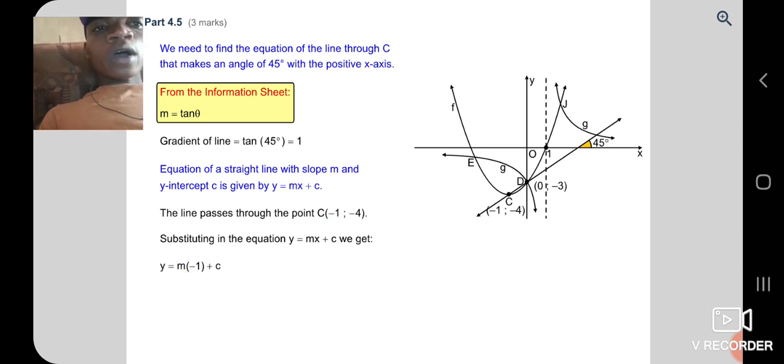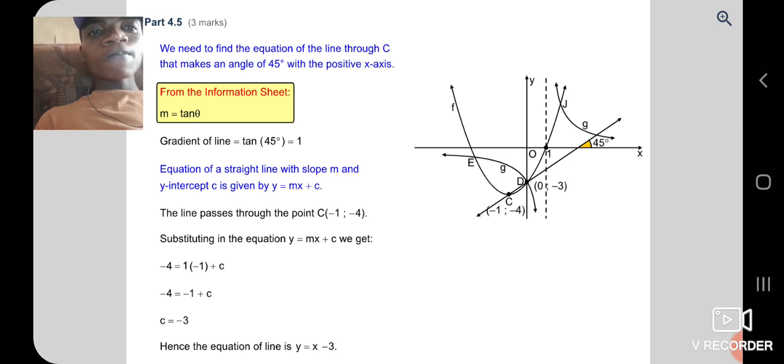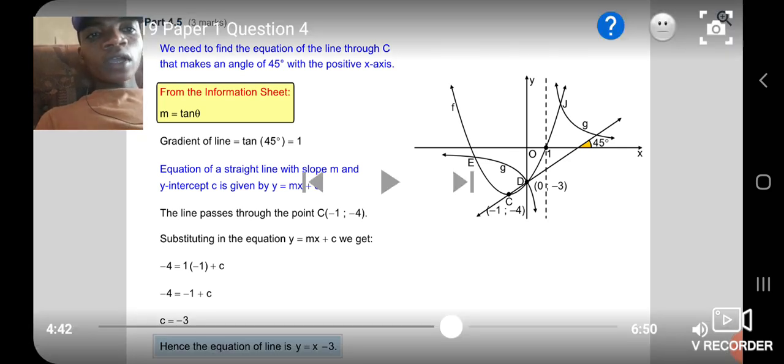We have -1 and -4. So we make c subject of the formula and we have 1 that we find in the another question. c = -3. Hence, the equation is y = x - 3. We have the equation of the straight line. Let's continue.